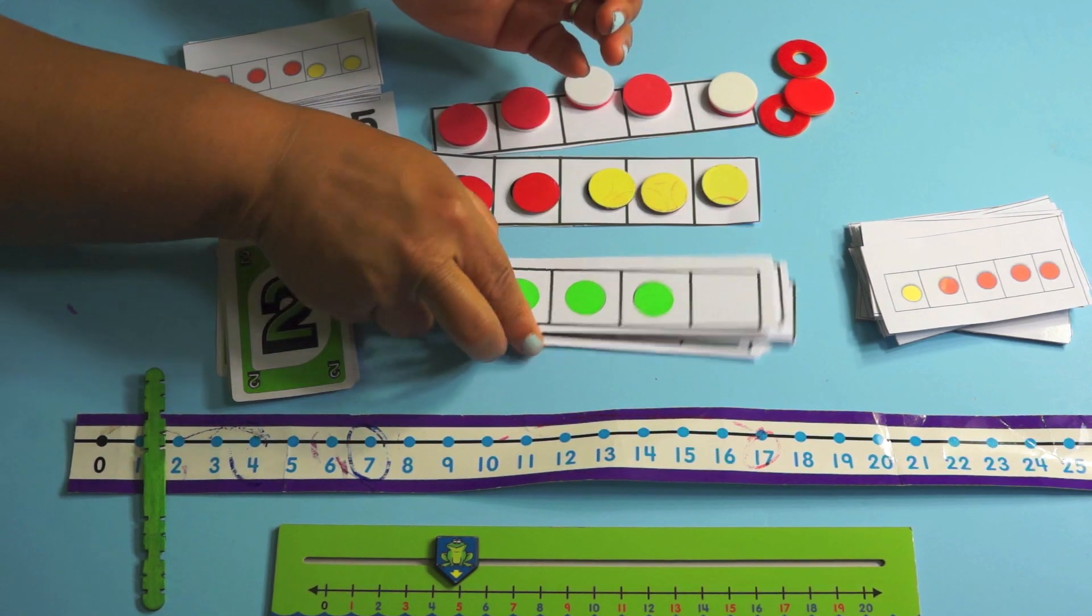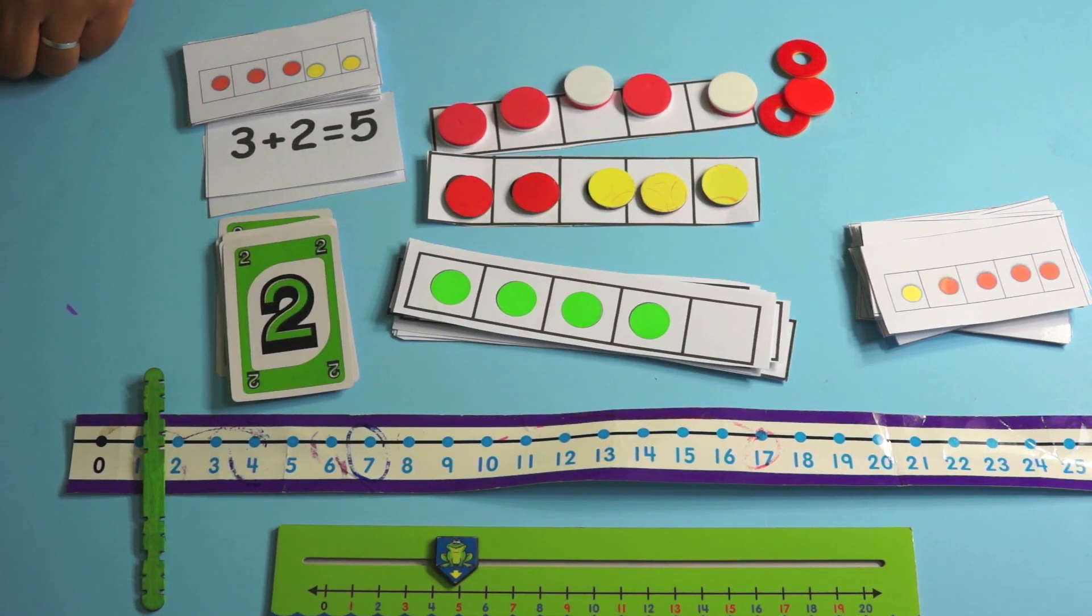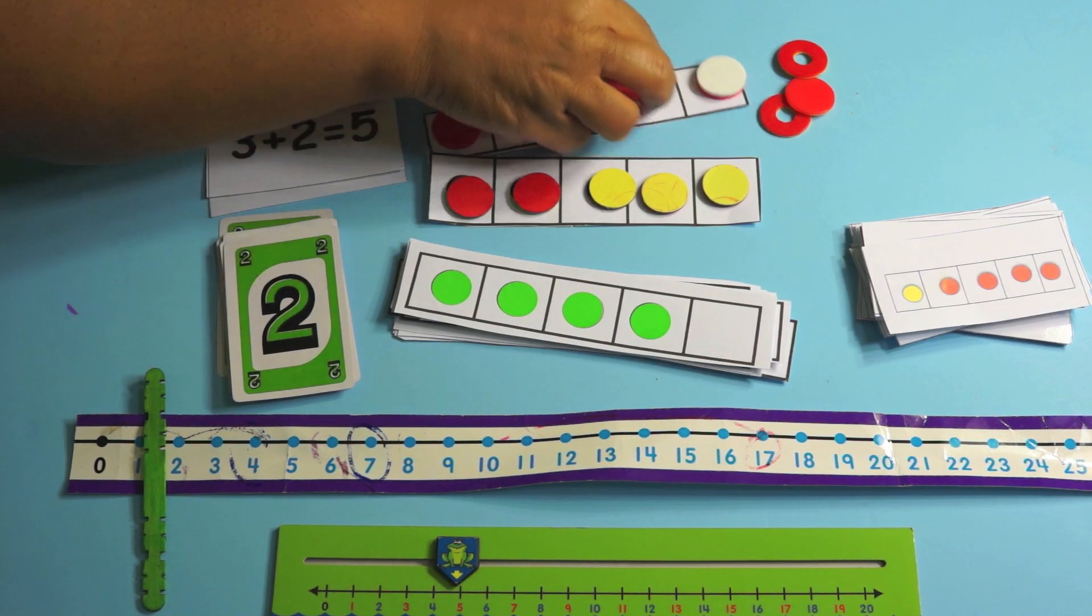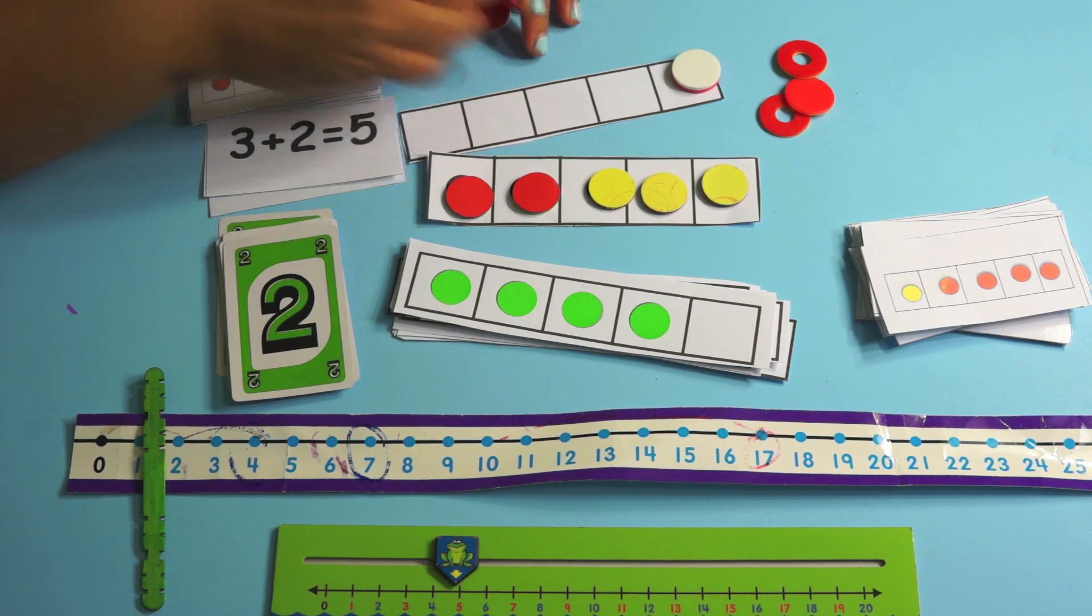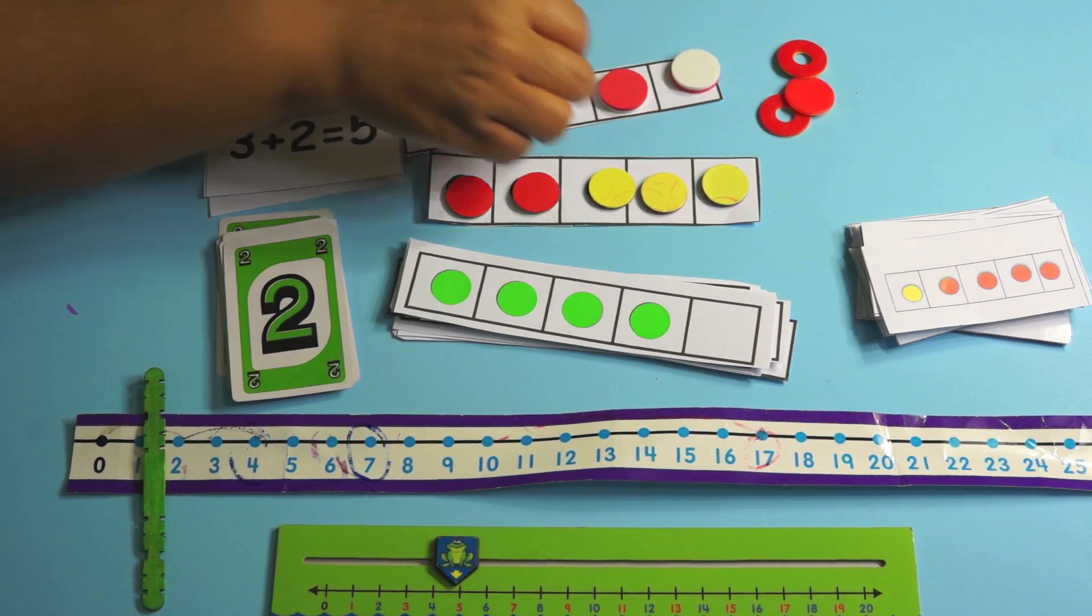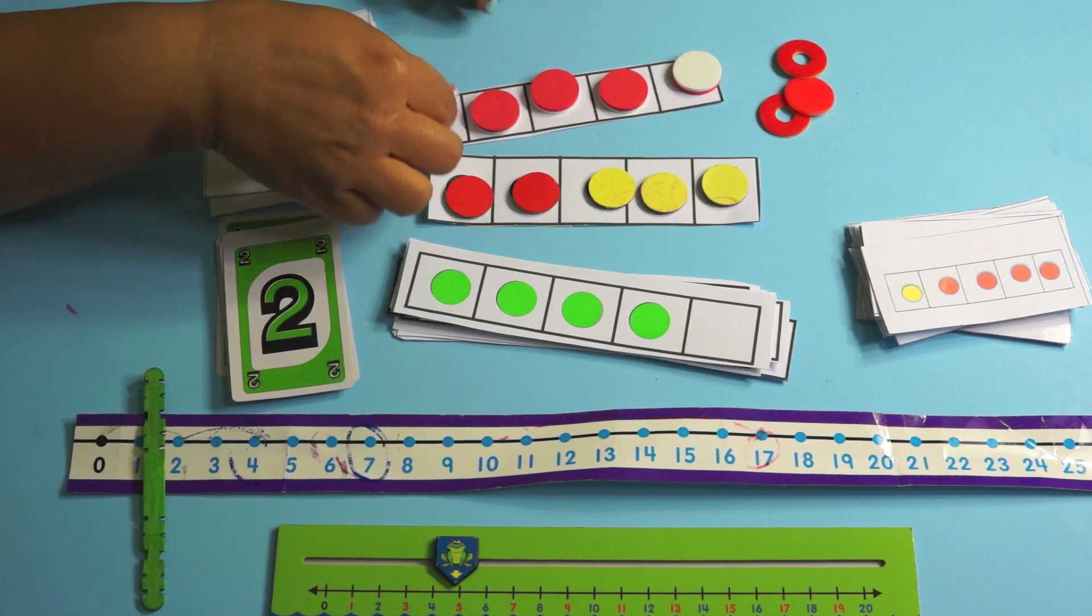So then the next thing you want to do is you want to do how many more. So play games with the kids. I'll say, oh, I have one counter. How many more do I need to make five? And then the kids count out one, two, three, four, one and four make five.